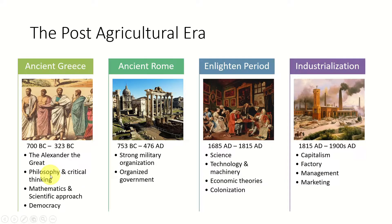Great philosophers like Socrates, Aristotle, and Plato are among the contributions of ancient Greece. They also laid the foundation for mathematics and science. Famous mathematicians like Euclid, considered the father of geometry, and Pythagoras, as well as the scientist Archimedes, all came from ancient Greece. Ancient Greece also contributed to the inception of democracy.